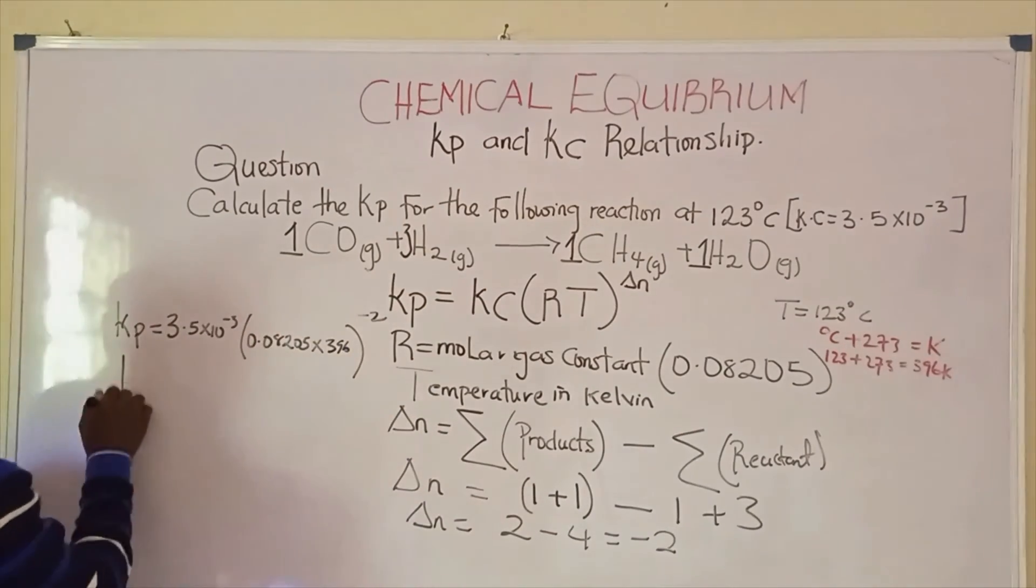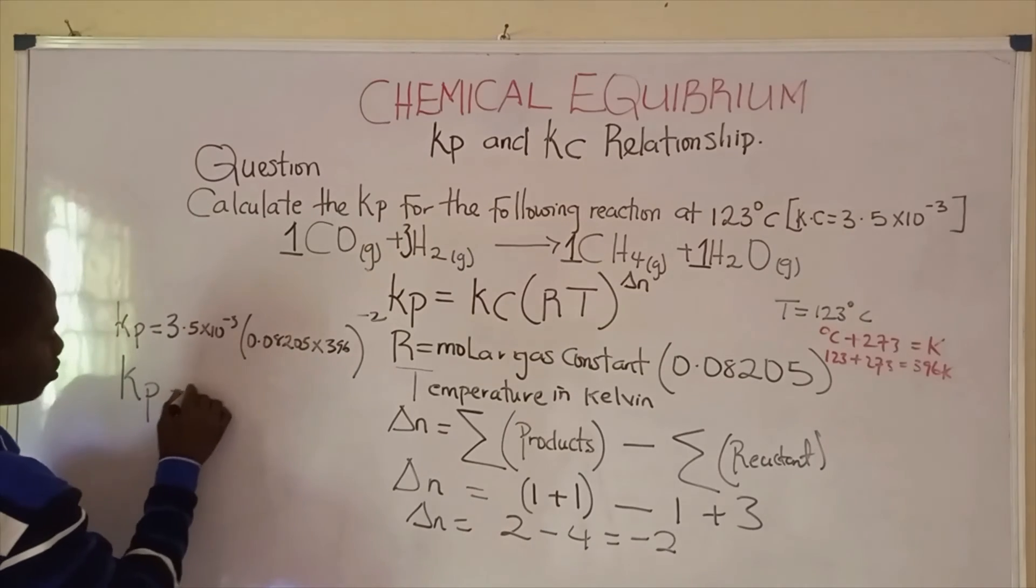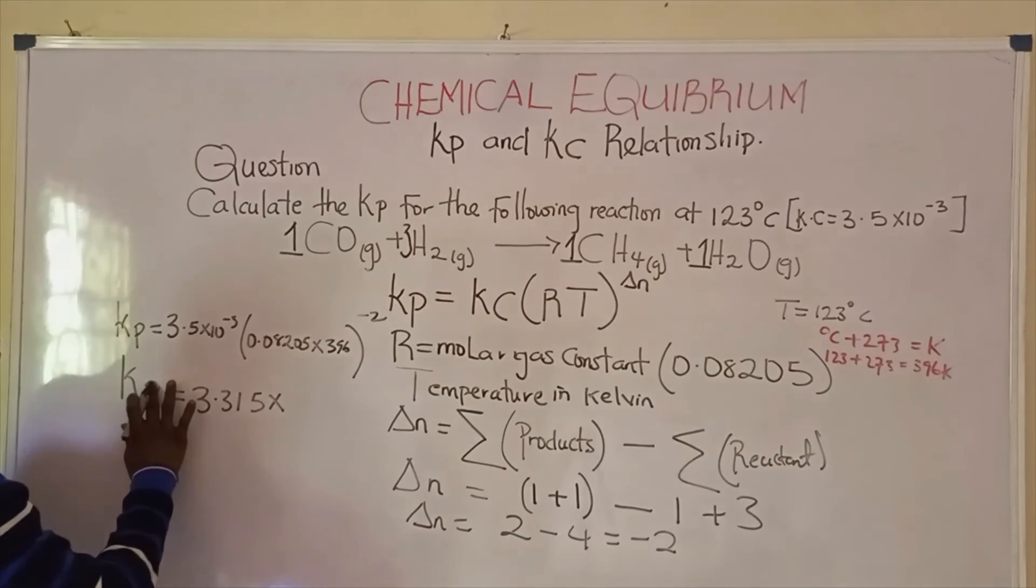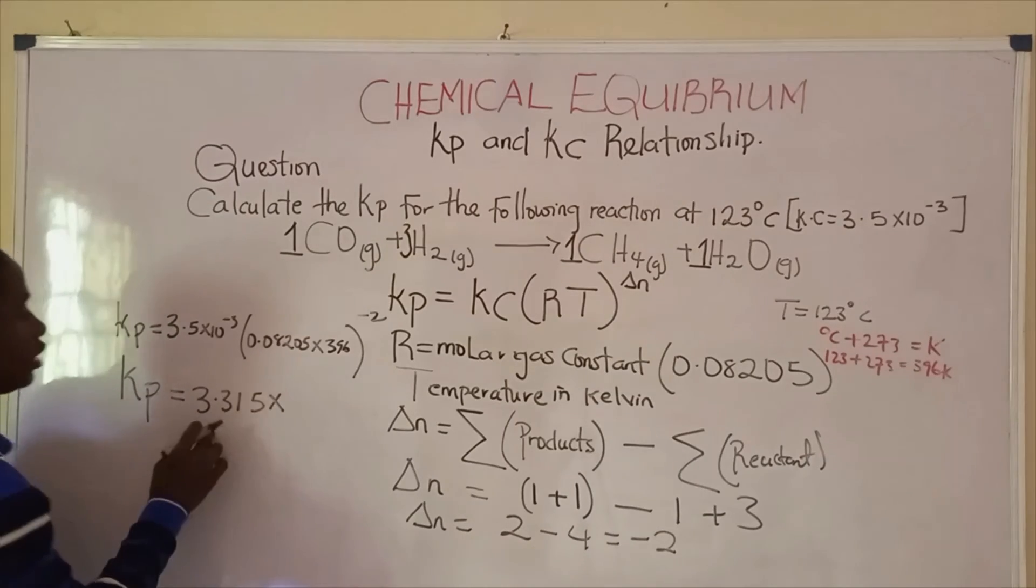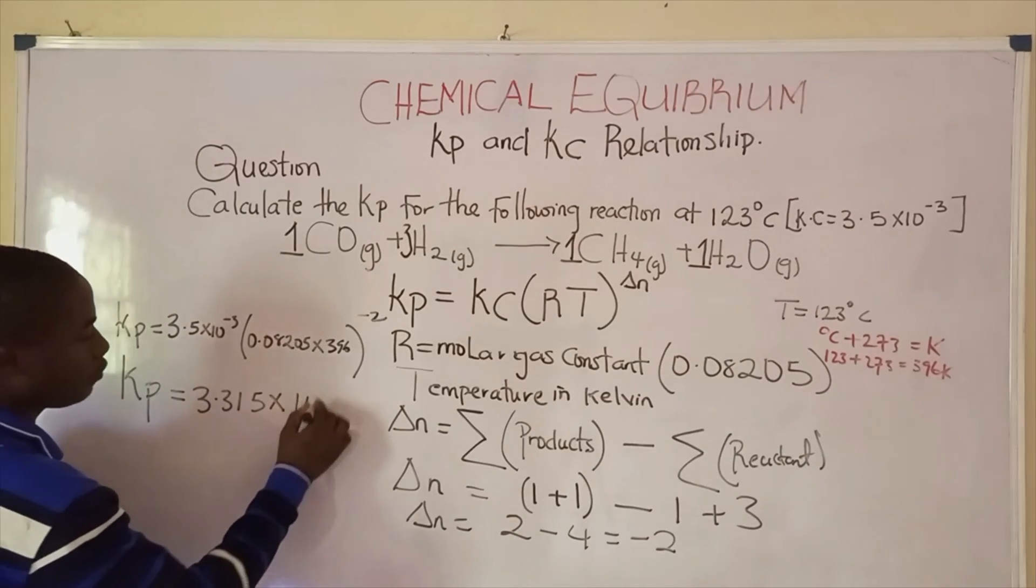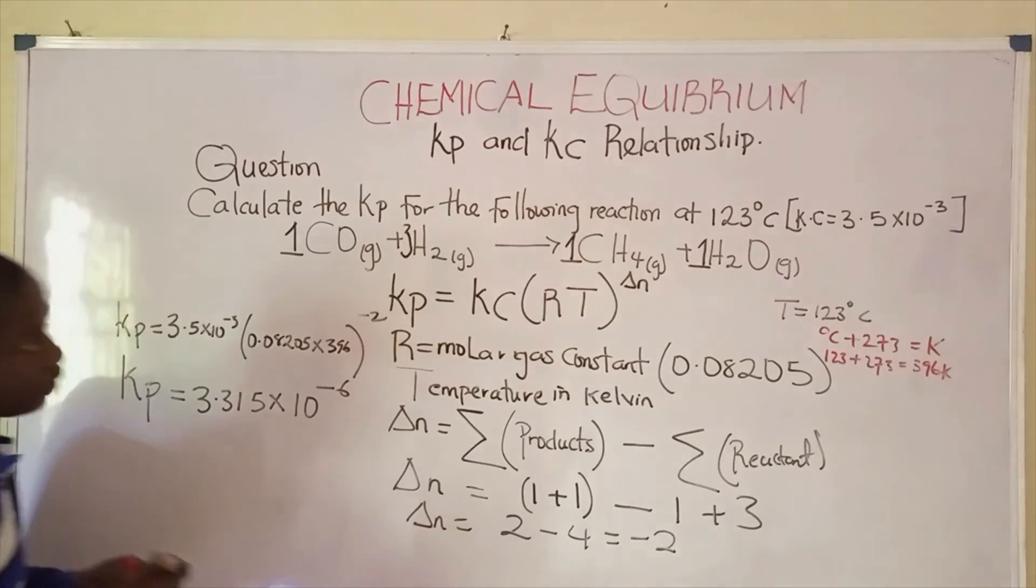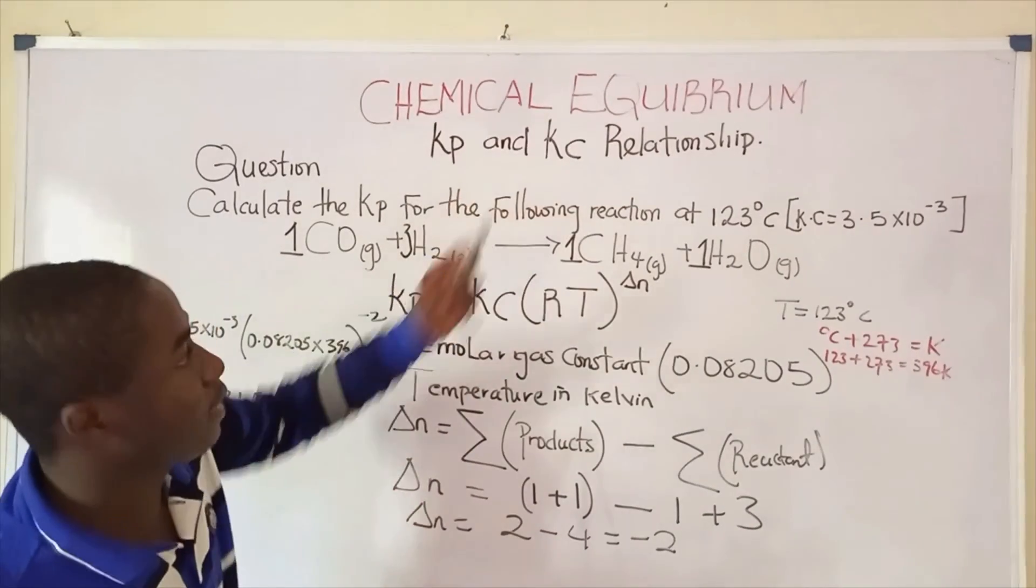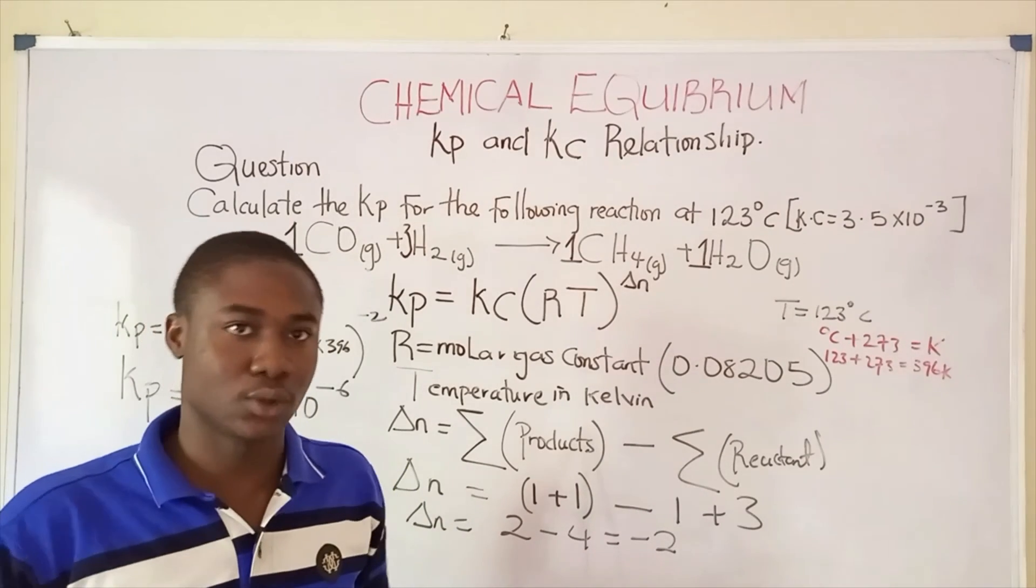So Kp for this reaction becomes 3.315 times 10 raised to the power of negative 6. This is how to solve problems relating Kp and Kc of a reaction.